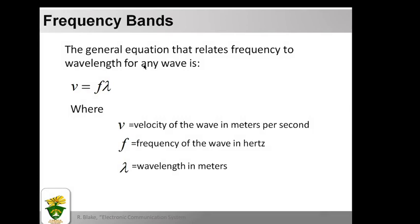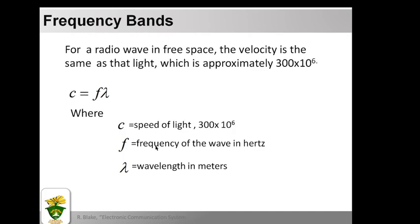Radio waves can also be described according to their wavelengths, which is the distance a wave travels in one period. The general equation relating frequency to wavelength for any wave is: v = f × λ, where v is the velocity of the wave in meters per second, f is the frequency in Hertz, and λ is the wavelength in meters. For a radio wave in free space, the velocity is the same as the speed of light, approximately 300 × 10⁶ meters per second.